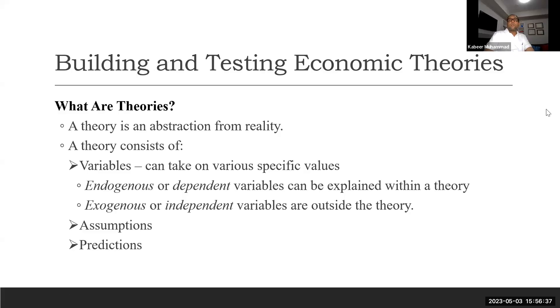We see here how the theory is or what is theory. What are theories? A theory is an abstraction from reality. A theory consists of variables that can take on various specific values. Some variables are dependent variables and some variables are independent variables. We see the relationship between these variables in economics to develop a theory.